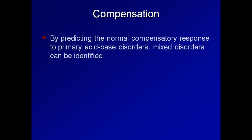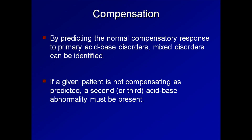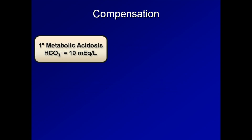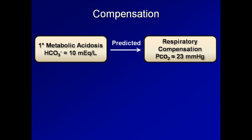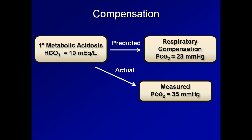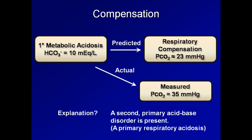By predicting the normal compensatory response to primary acid-base disorders, mixed disorders can be identified. Specifically, if a patient is not compensating as predicted, a second or even third acid-base abnormality must be present. For example, in a patient with a primary metabolic acidosis where the serum bicarb is 10 mEq/L, you would predict the pCO2 should be approximately 23 mmHg. However, if the measured pCO2 is 35 mmHg, a second primary disorder must be present — in this case, a concurrent primary respiratory acidosis.